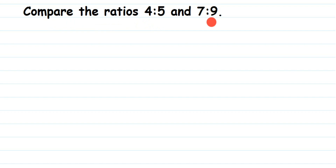We have 4 is to 5 and 7 is to 9. We've learned that ratios can be written in fraction form, so 4 is to 5 equals 4 by 5, and 7 is to 9 equals 7 by 9. Now, what is the easiest way?